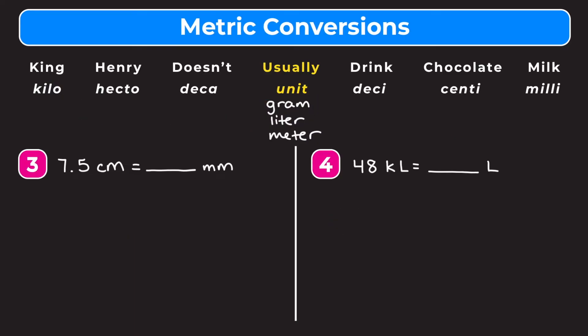In example three, we have 7.5 centimeters and we want to convert it into millimeters. Going from centi to milli, we just move one spot to the right. So we move the decimal point in our original number one place to the right, and we get that 7.5 centimeters is equal to 75 millimeters.